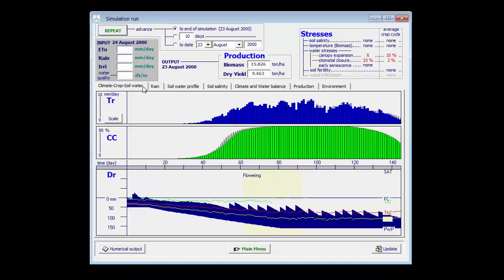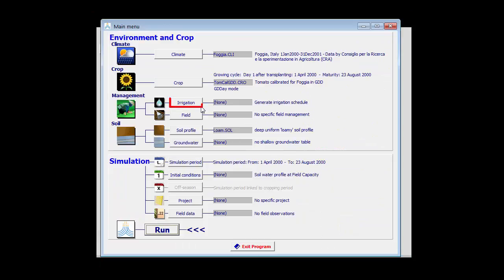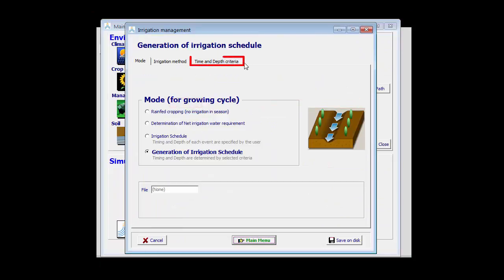I can still try to gain more water by switching off the irrigation in August, during the ripening stage.